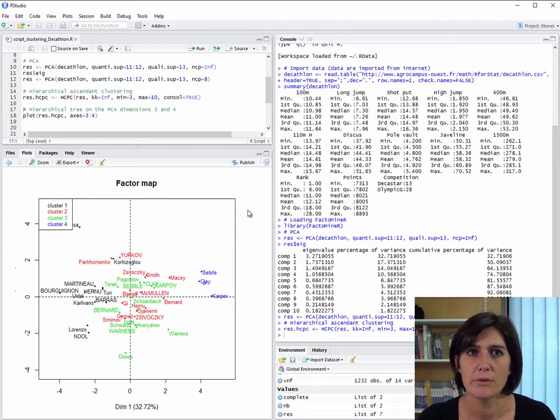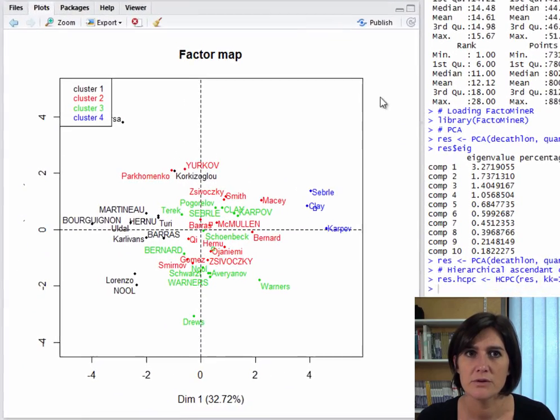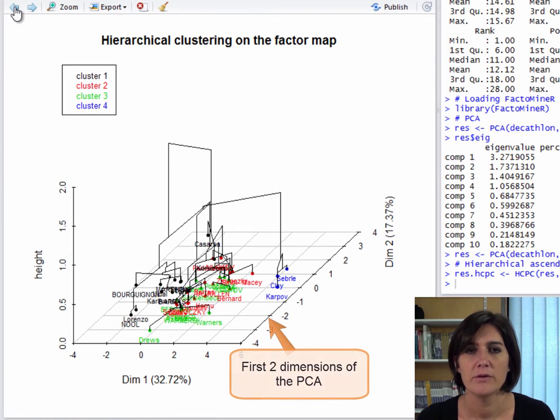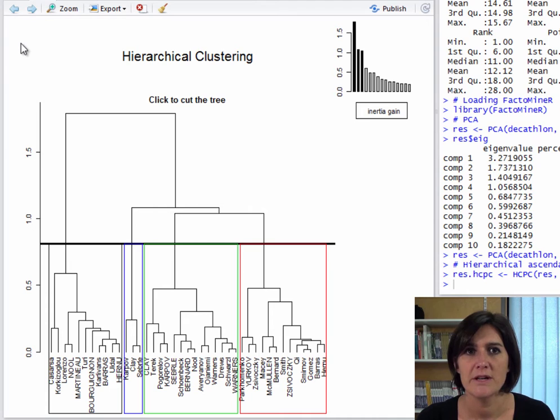Several plots are produced when we run this function. The first one shows the individuals on the first two axes of the PCA, that is, the first two dimensions. The individuals are colored in terms of which classes they belong to. We also get a three-dimensional plot showing the individuals in the first two dimensions for the PCA, and in the third plot, the hierarchical tree. This tree shows the relative proximity of the individuals to each other. For example, like for the previous plot, the blue and black classes are well separated, whereas the green and red ones, not so much.